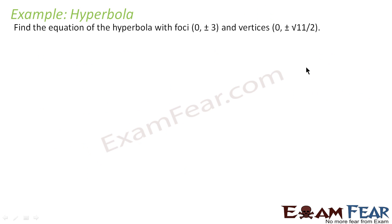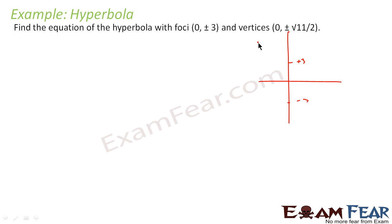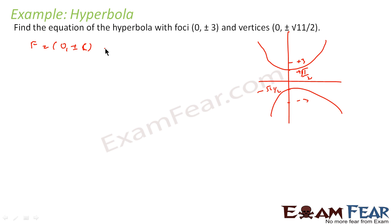So we have to find the equation of hyperbola where foci is (0, ±3). Here if you see, the foci is on the y-axis. Since we know that the foci is equal to (0, ±c) and this is equal to (0, ±3), so c is equal to 3.